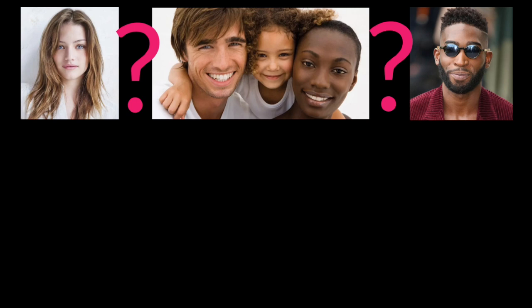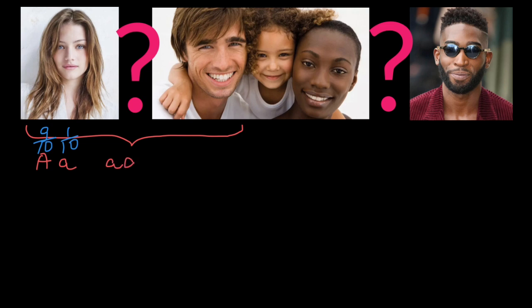Let's say we have some gene A in this population. It can have the dominant normal allele A, or the recessive allele a, which is defective. The frequency of this dominant allele is going to be 9 out of 10, and the frequency of the recessive allele is going to be 1 out of 10. If a person has two such defective alleles, they will manifest some genetic disorder. The probability for this couple, who belong to the same ethnicity, to have a child with genotype small a, small a is 1/10 × 1/10, which equals 1 out of 100.